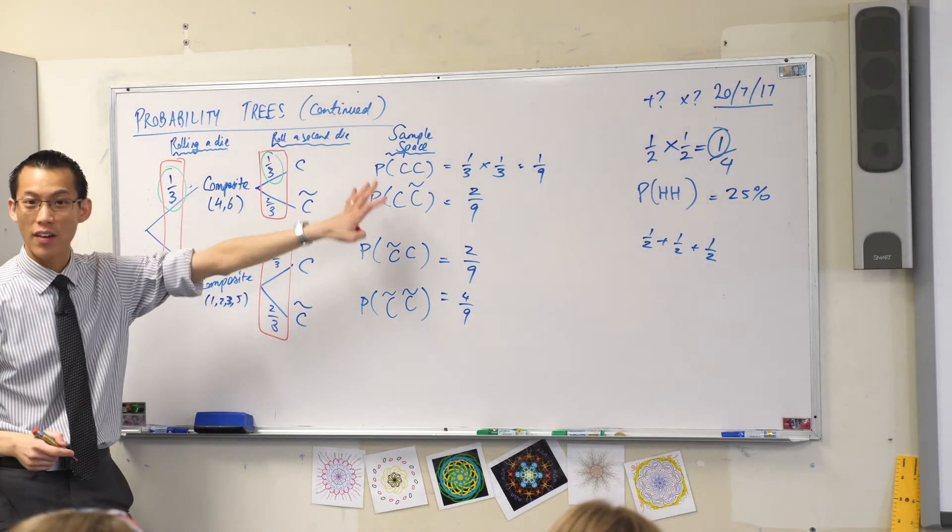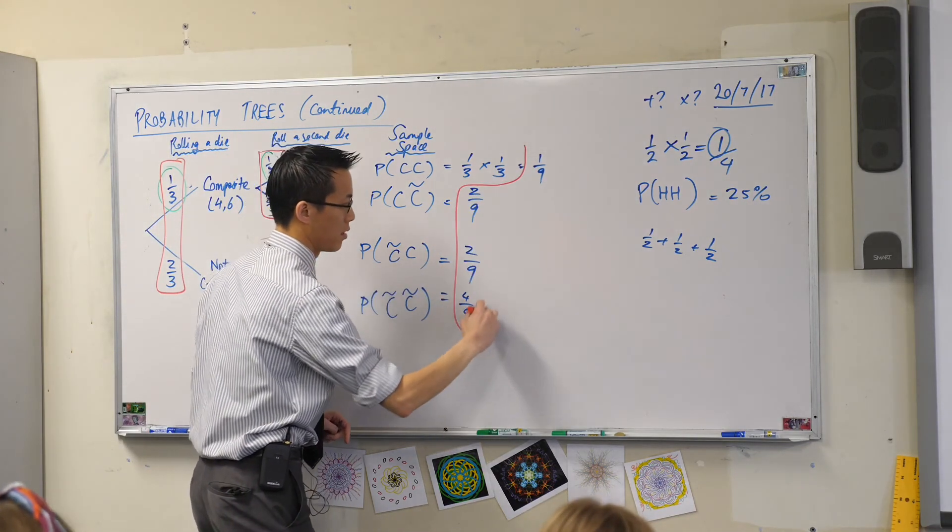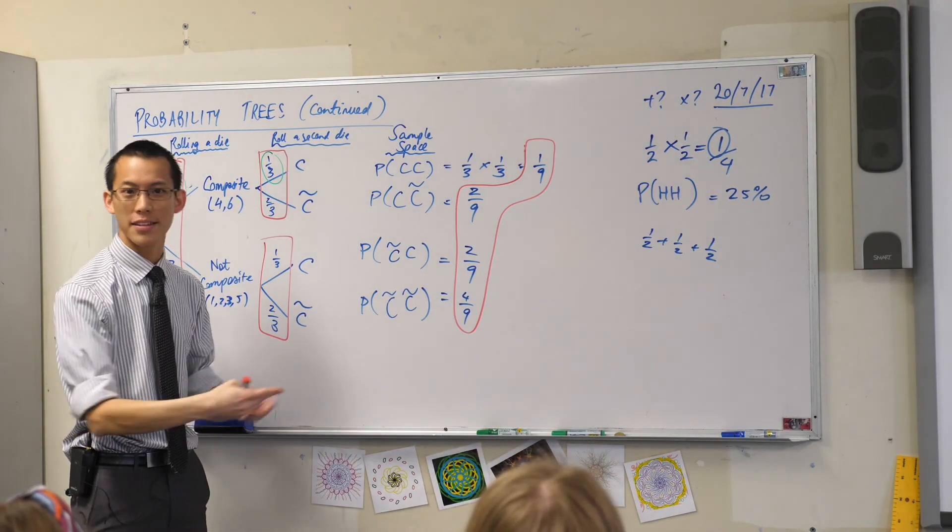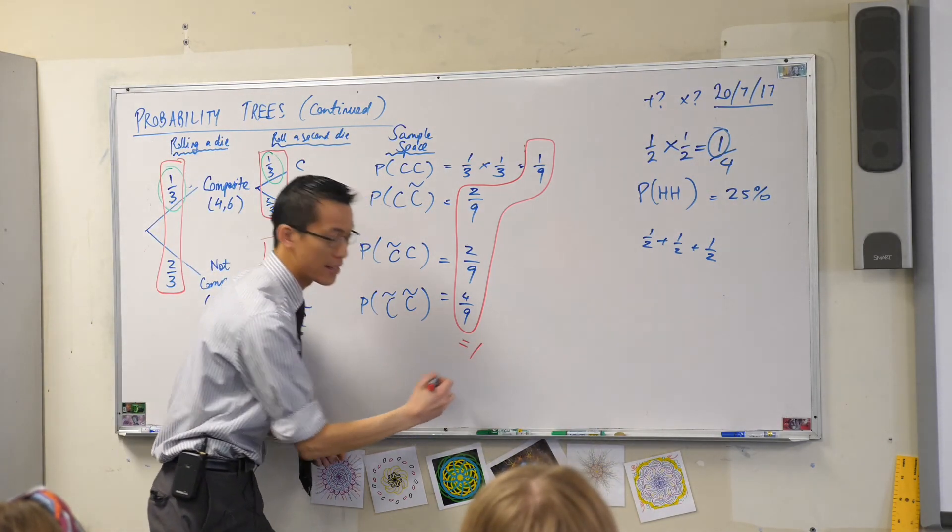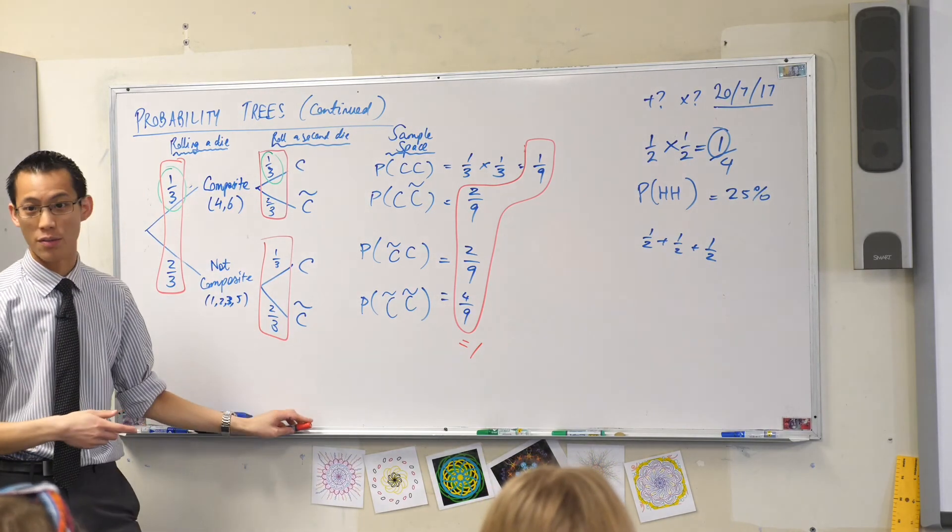One ninth, two ninths, two ninths, four ninths - it still adds up to one. Does that make sense? So this is actually a really important way that you can know that you have done it right.